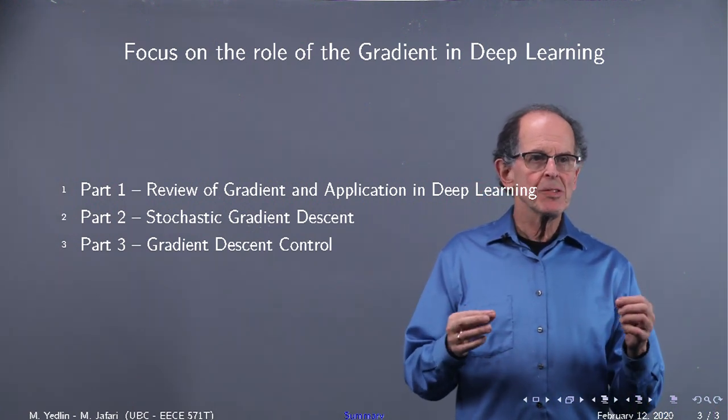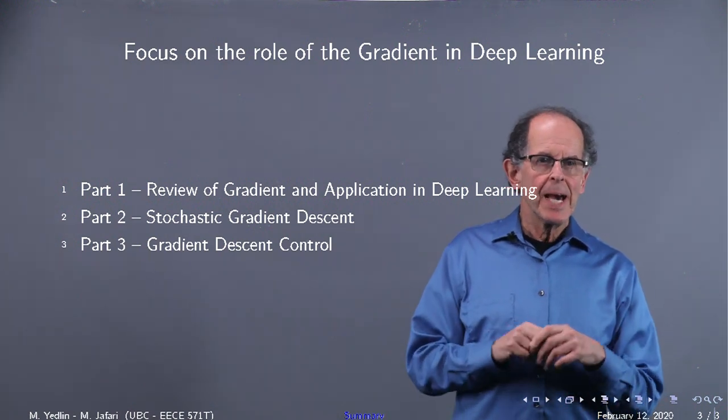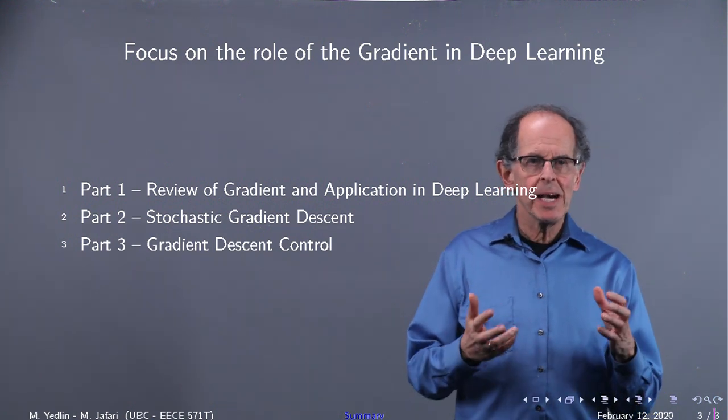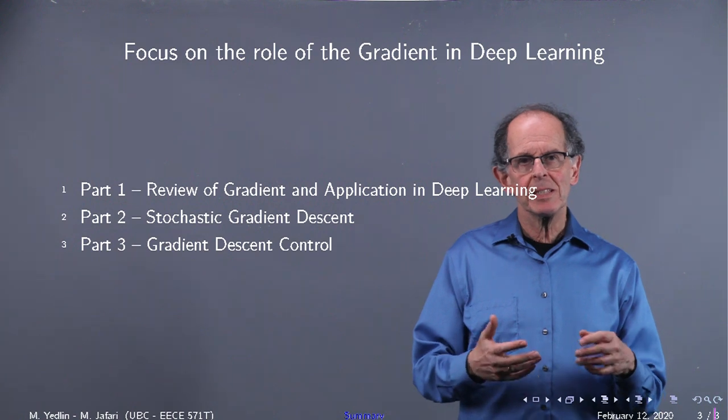So far, we've only considered one single training input. And the next item we're going to look at in part three of this analysis of gradients is what controls the gradient descent.